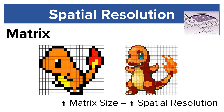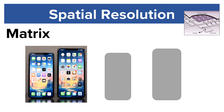To put this in perspective, the iPhone 11 Pro on the left has a matrix size of 1,125 by 2,426, and the iPhone 11 Pro Max has a matrix size of 1,242 by 2,688.